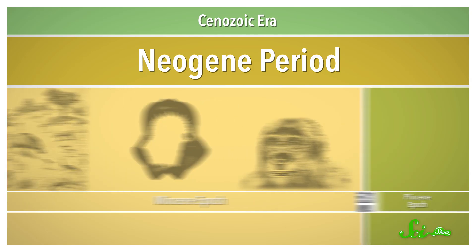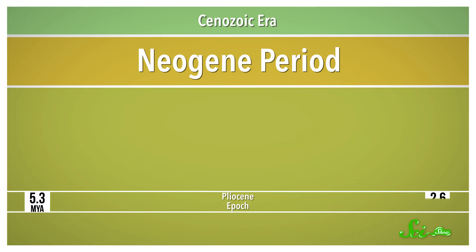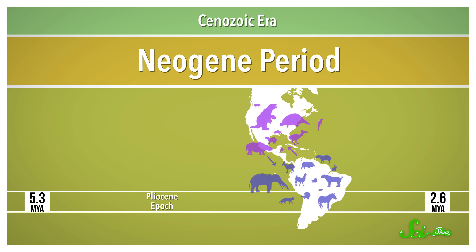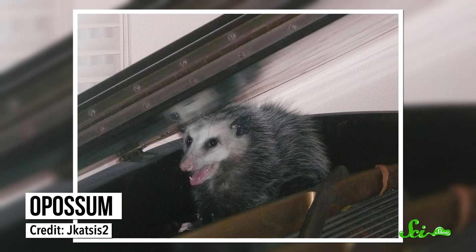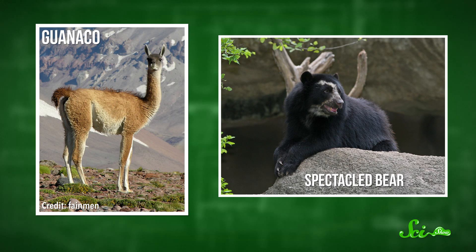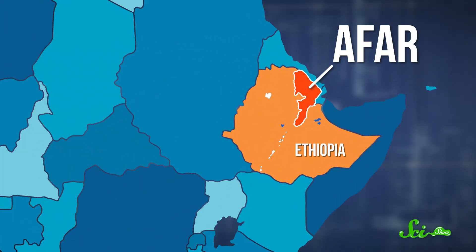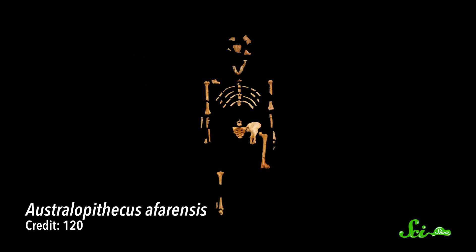At some point before or during the Pliocene Epoch, from 5.3 to 2.6 million years ago, North and South America crashed into each other. During the Pliocene, animals crossed the new land bridge and switched up their places on the continents. Opossums colonized North America — and as anyone who's driven around here knows, they stuck around. Camels and bears moved into South America, and they're still there too. And in the Afar region of Africa, there lived the early human relative Australopithecus afarensis.